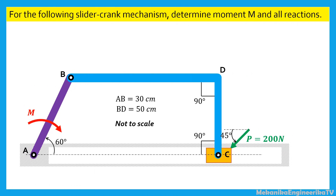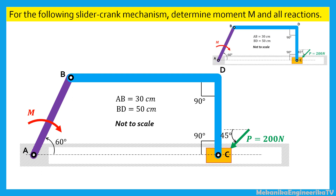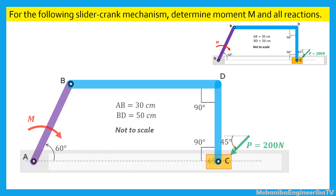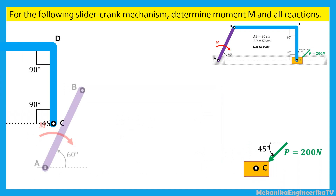Let's first start by drawing the free body diagram of the three links: bar AB, bar BDC, and slider C. To this goal, we first need to keep a miniature of the mechanism to recall connections between bars, and then we need to split the links apart.